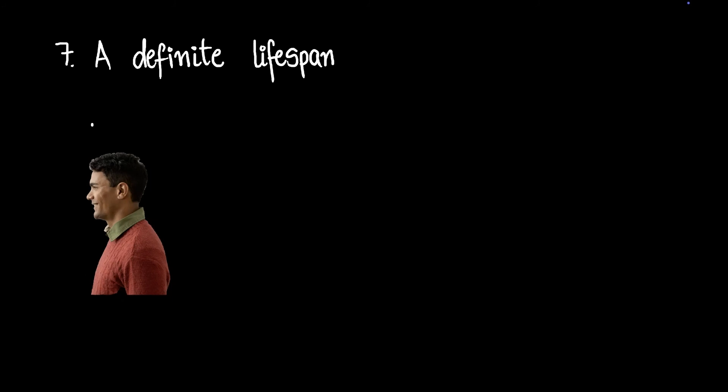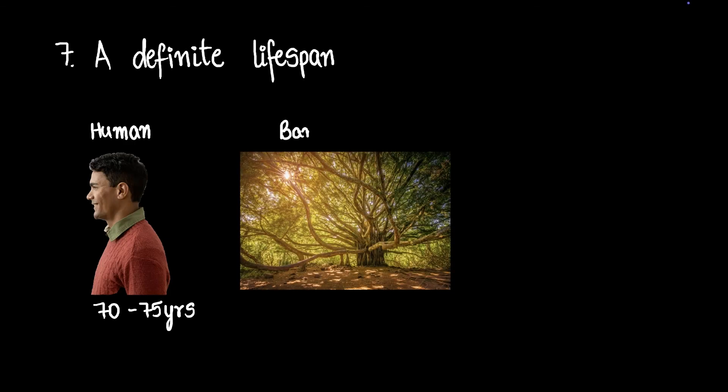So that was reproduction. Now let's discuss our seventh characteristic, that is a definite lifespan. If you look at the human race, you would find that most humans live from around 70 to 75 years. And that's like the lifespan of a human. Similarly, if you look at a banyan tree, you would find that banyan trees live usually from around 200 to 250 years or so. And similarly, every organism has some kind of lifespan.